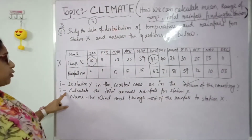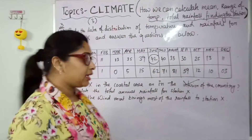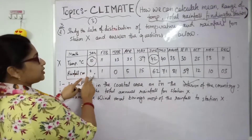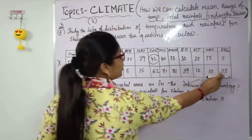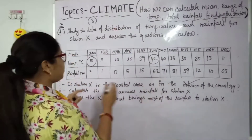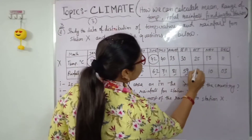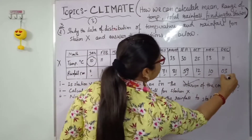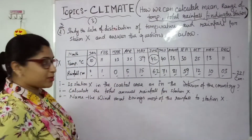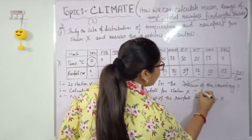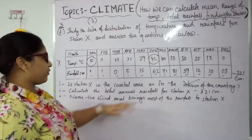Next, question number 2: calculate the total annual rainfall. This is very easy — you all know addition. Annual means one year, so 12 months. We have to add the rainfall for all months: 2, 1, 0, 5, 15, 62, 71, 81, 59, 12, 10, 3 — and the total comes to 321 centimeters. That is the total annual rainfall.